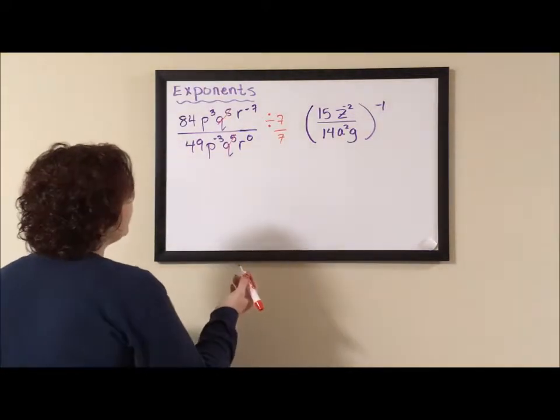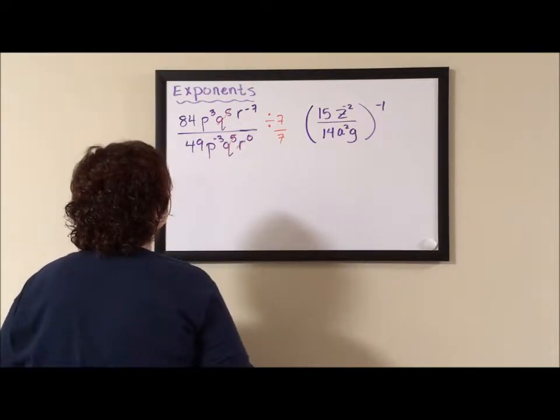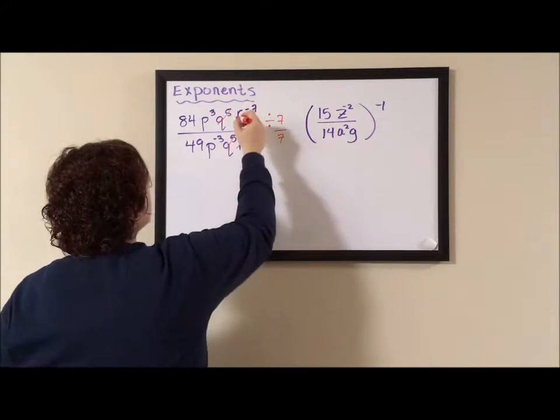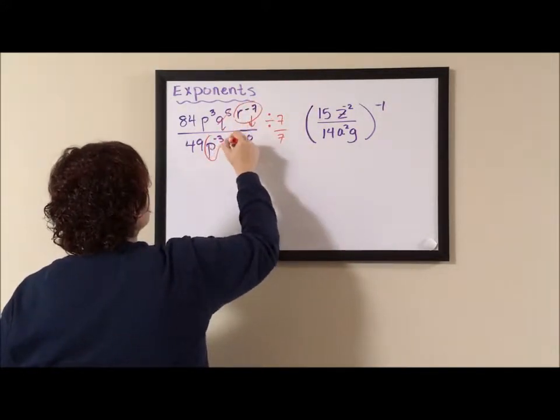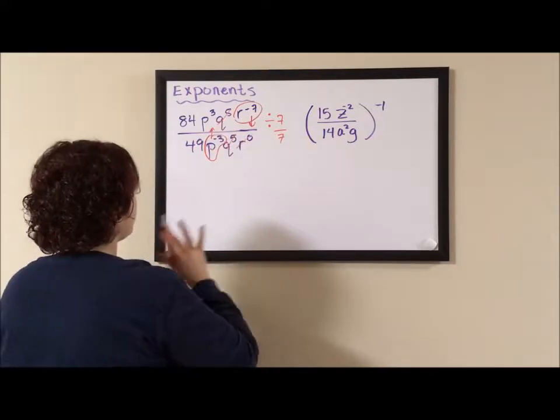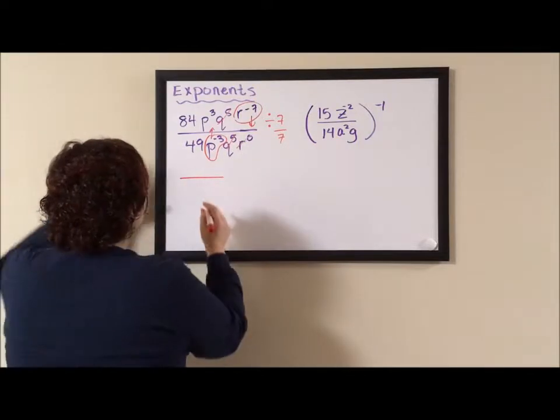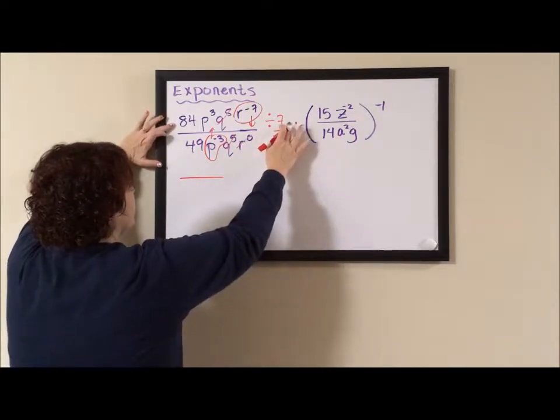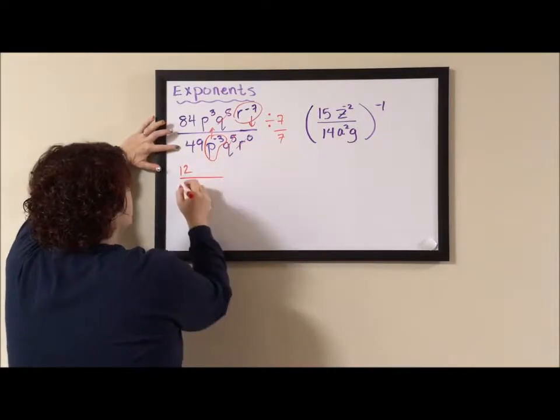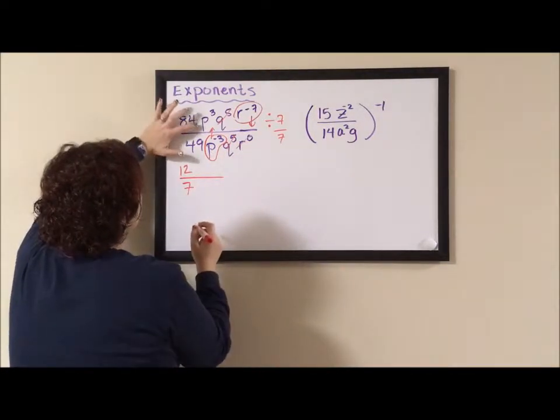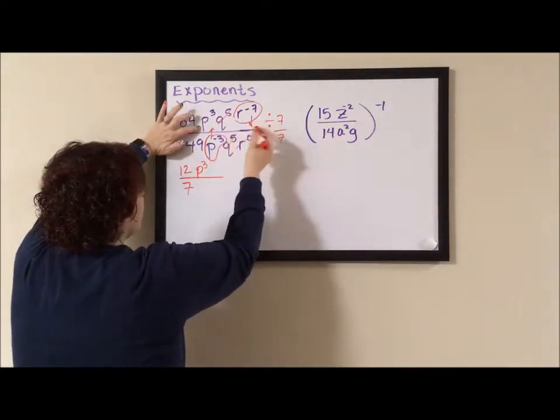R to the 0. That means my counter is 0, and anything to the power of 0 is 1, that one goes away. The next thing I want to do is I want to take my negative exponents and shift them. Okay, a lot of things going on. First of all, 84 divided by 7 is 12. 49 divided by 7 is 7. Okay, P cubed. That P cubed stays in the numerator. Okay, nothing else.